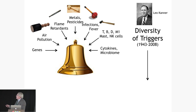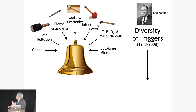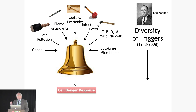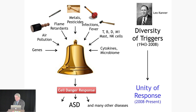Leo Kanner described the first 11 patients with autism spectrum disorder in 1943. For 70 years, we've collected lists of genes and environmental toxicants, metals, in utero infections, cellular events, and microbiome events that can all lead to a diagnosis of autism. One way of unifying this is to say those are just different mallets that ring the same bell — it's not so much about the diversity of triggers, but about the unity of the response.